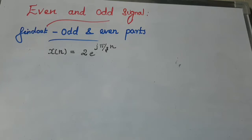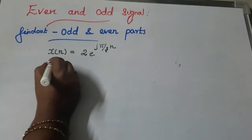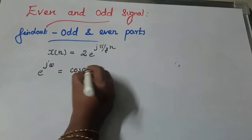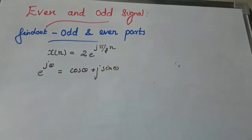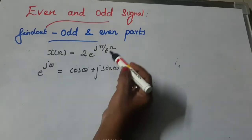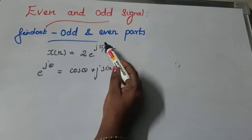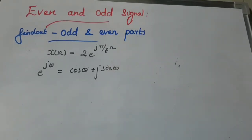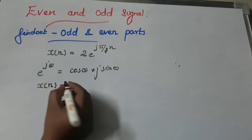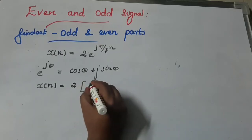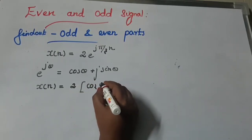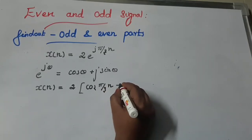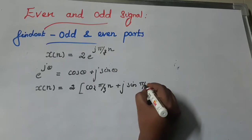First, how do we write the exponential term in terms of cosine and sine? We know that e^(jθ) is equal to cos(θ) plus j·sin(θ). Here, instead of θ, the value is π/3·n. So x(n) is equal to 2·cos(πn/3) plus j·sin(πn/3).